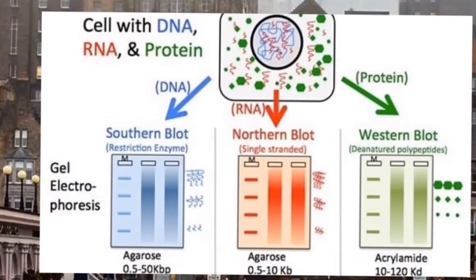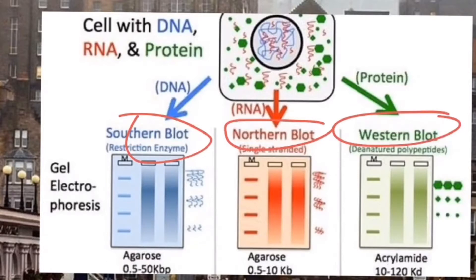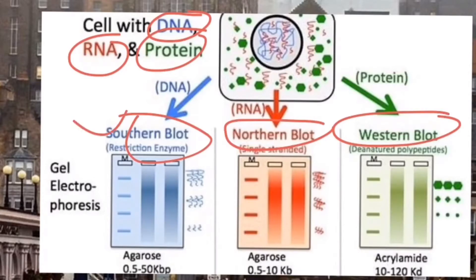Welcome to the channel. We are going to understand some basic principles in molecular techniques: Southern blotting, Northern blotting, and Western blotting. In cells, three macromolecules are present — DNA, RNA, and proteins. We need to identify and separate them on the basis of their molecular weight, shape, and size. These three techniques were developed to identify specific DNA, RNA, and protein molecules.